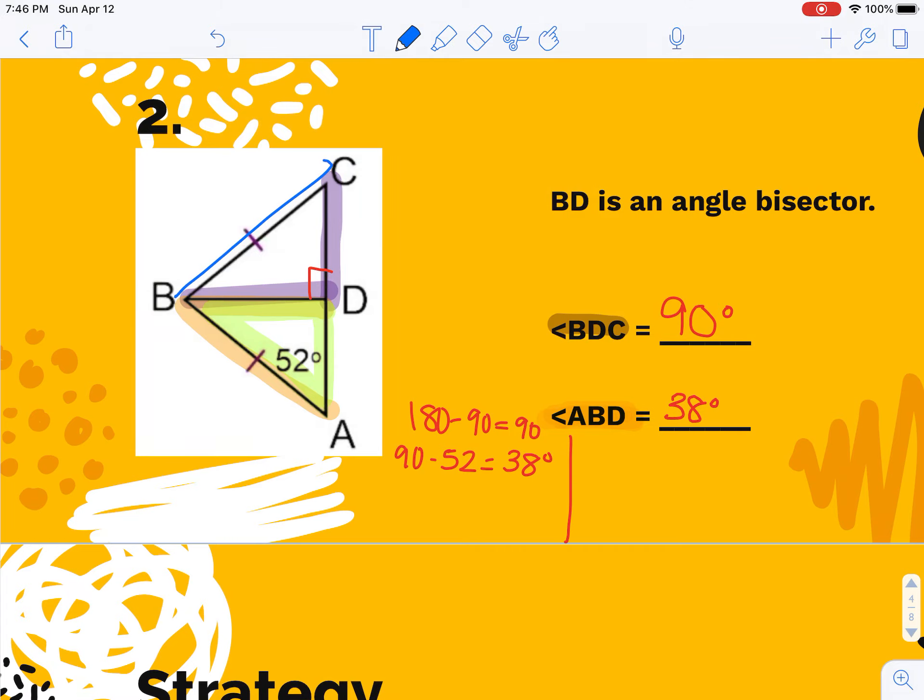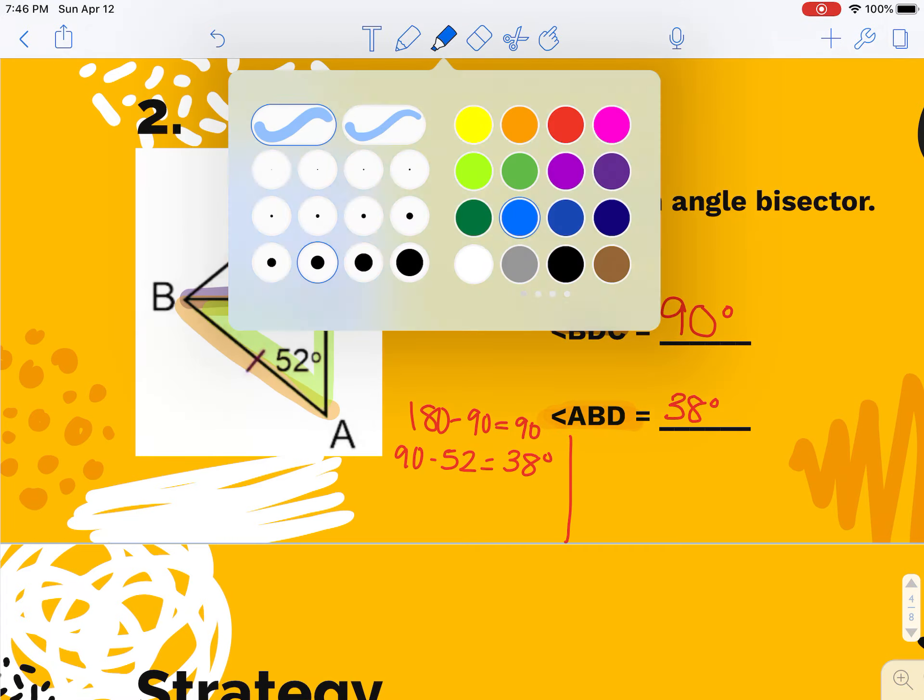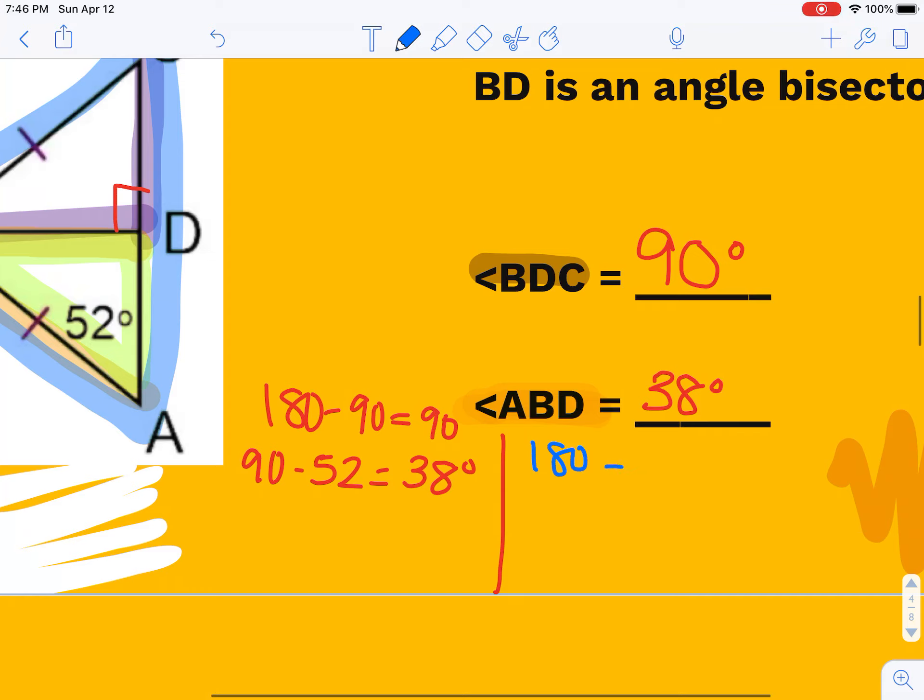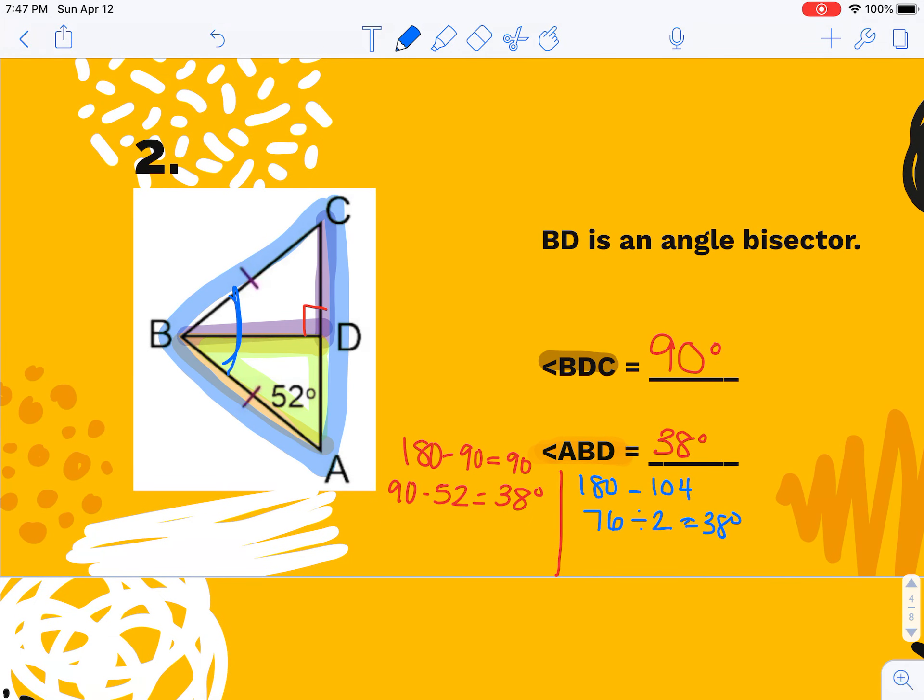I can also use this blue triangle and say I have 180 degrees. I have two angles that are 52 degrees each, so I'm going to subtract off 104. So I have 76 degrees left and I'm cutting that angle in half, so I get 38 again. So this whole thing would be 76, cut it in half, you get 38. I do not care which way you do it. It does not matter as long as you get to an answer.